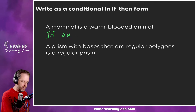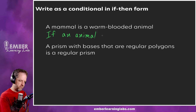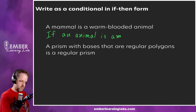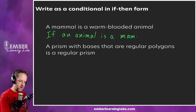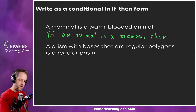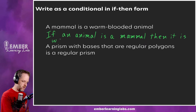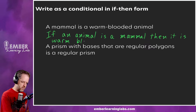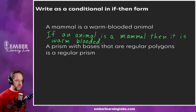Converting that to if-then form: if an animal is a mammal, then it is warm-blooded. I should have spread things out a little more on the board, but it's still mostly visible. There's the first one turned into if-then form.